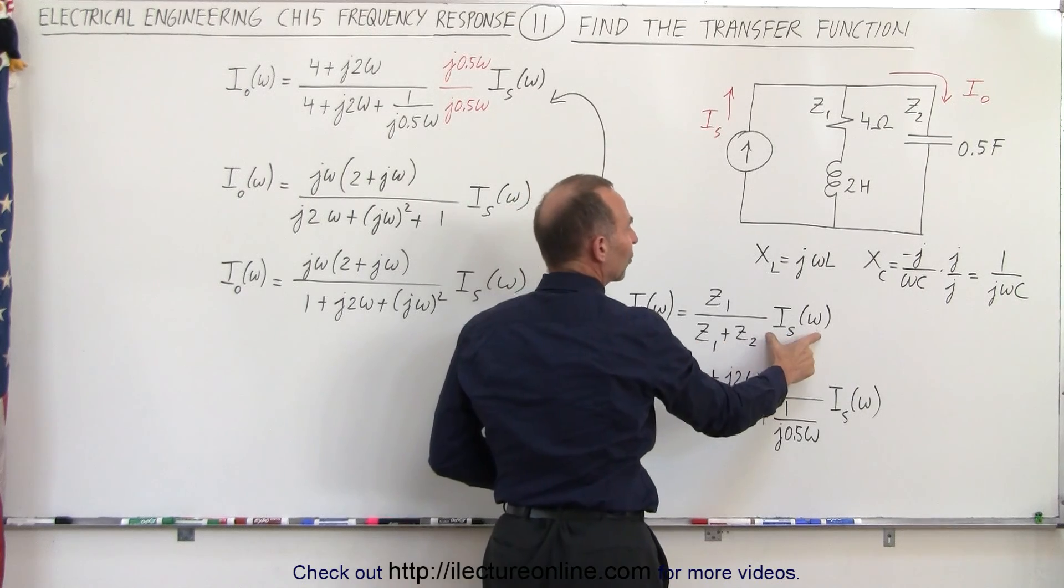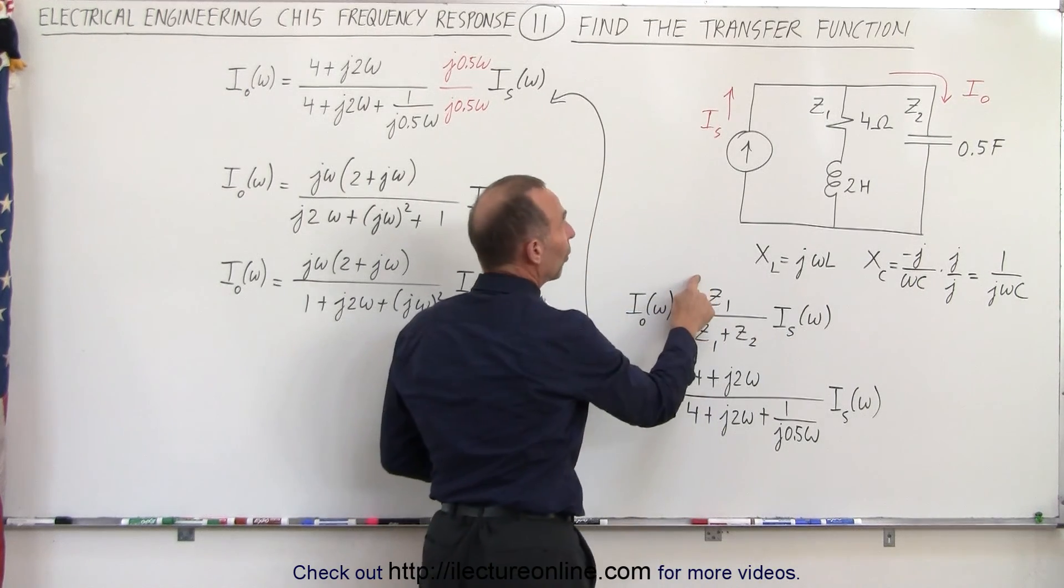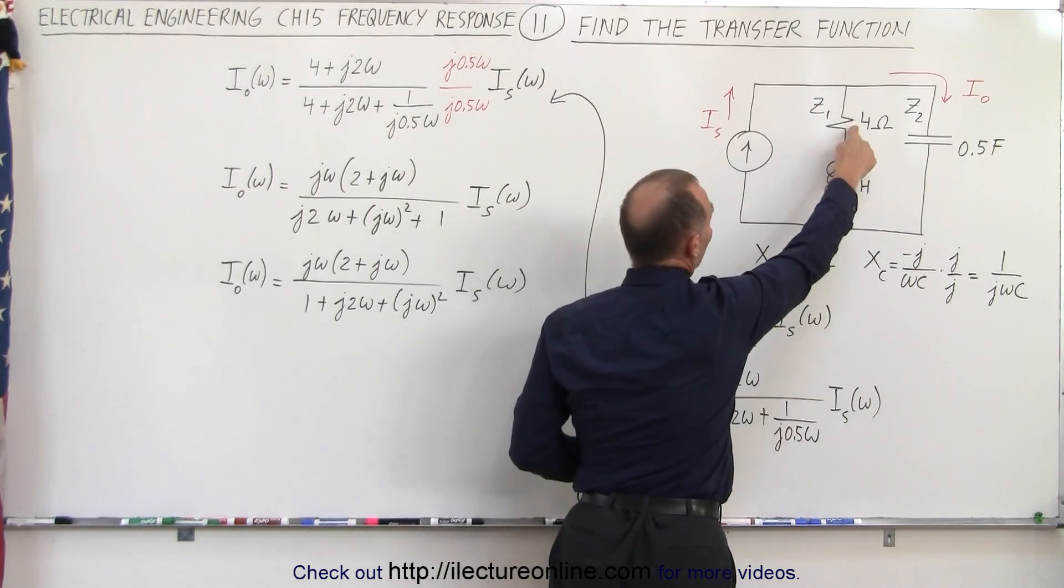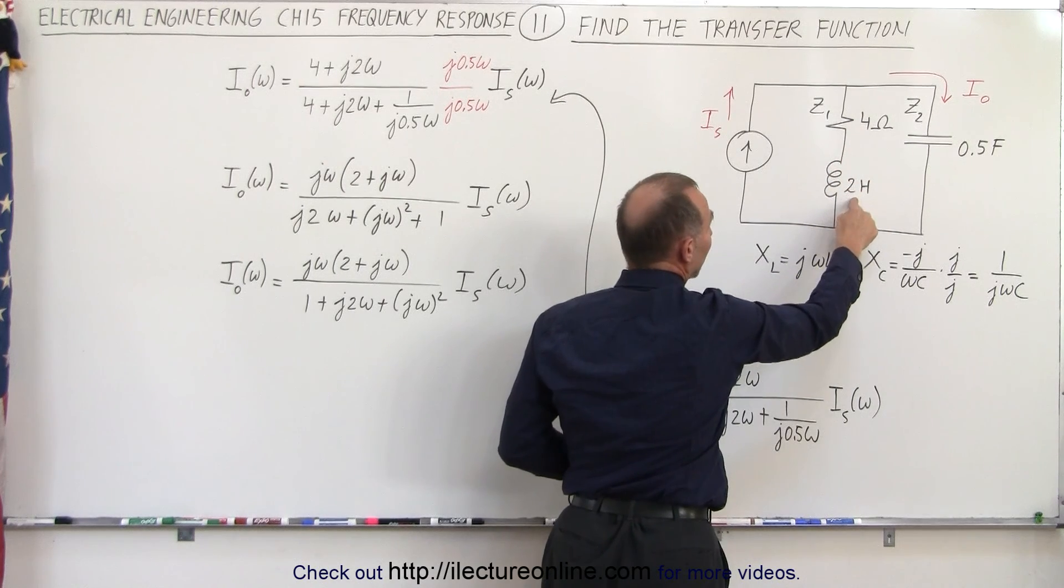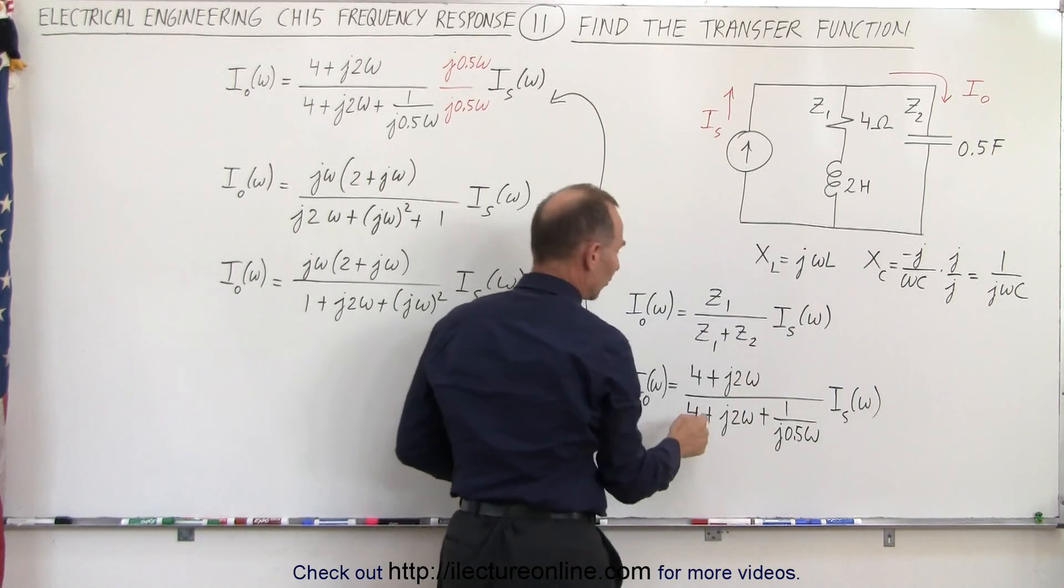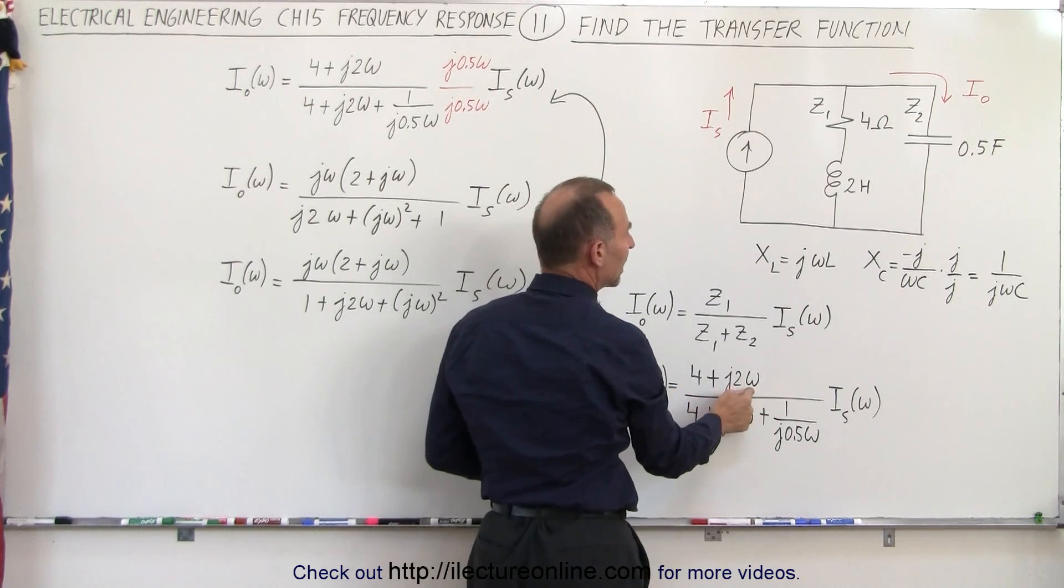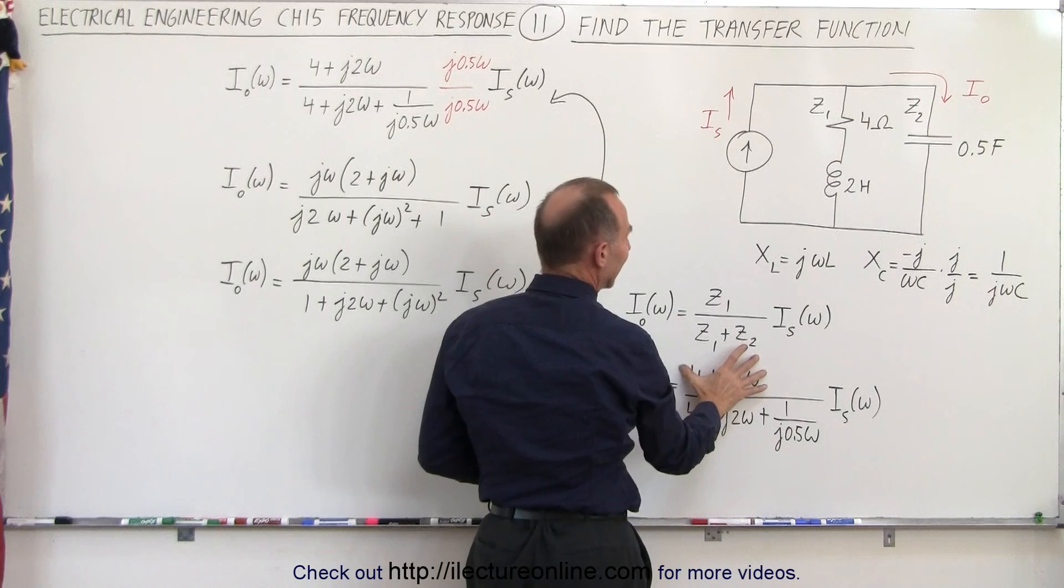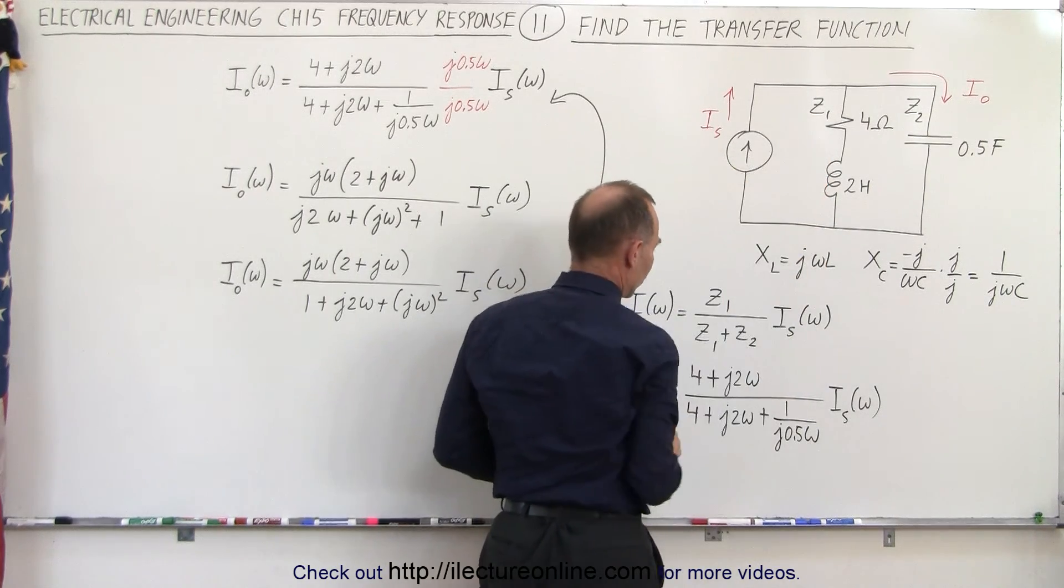Now Z1 is going to be the 4 ohms plus the reactance of the 2 henries. So you can see that will be J omega times 2. Therefore we have 4 plus J2 omega as the impedance in the left branch here.